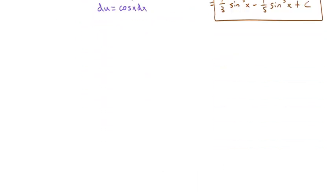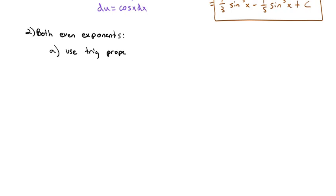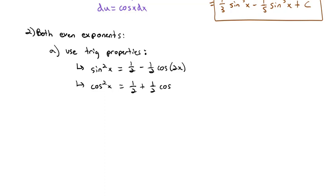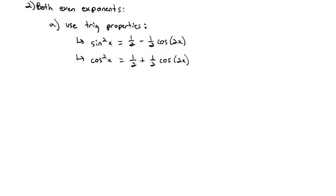If we aren't so lucky and they both have even exponents, we need a slightly different strategy. We will use two trig properties: sine squared of x equals 1/2 minus 1/2 cosine of 2x, and cosine squared of x equals 1/2 plus 1/2 cosine of 2x. Those substitutions will allow us to find something we can actually take the antiderivative of.